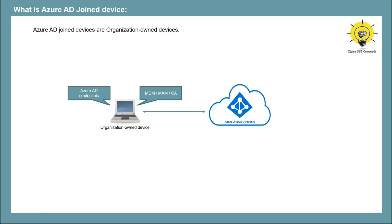If you talk about the supported operating system for Azure AD Joined Devices, you can join Windows 10 or Windows 11 devices to Azure AD. But if you are running the home edition, you cannot join that device with Azure Active Directory. You can also join Windows Server 2019 VMs that are running in Microsoft Azure. There are two ways to join a device to Azure Active Directory: you can join a device at the time of operating system installation, or post operating system installation. I will show you both ways.